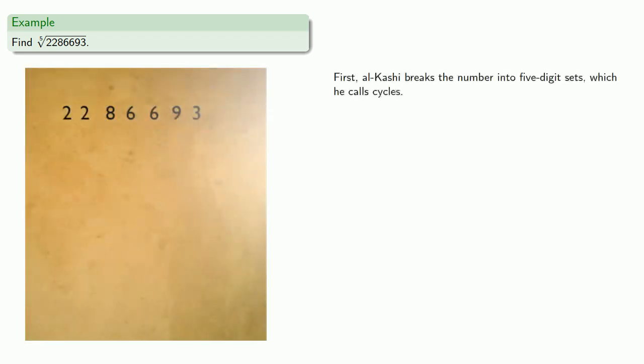To illustrate the process, let's find the fifth root of this number. Because it's the fifth root, Al-Kashi breaks the number into five-digit sets, which he calls cycles.